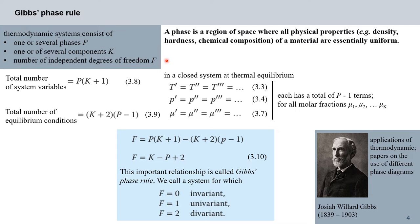The system is also composed of one or several components K, where by component we understand the minimum number of independent chemical constituents needed to produce a phase. The state of the entire system is described by state variables, and by freedoms F we understand the number of state variables we can vary independently without causing any of the phases to disappear. Examples of phase variables are pressure, temperature, and molar composition.